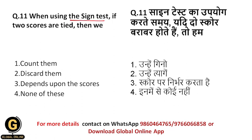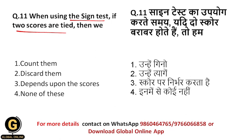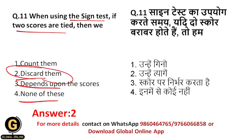Using the sign test, if two scores are tied, then we should count them, discard them, do it depending upon the scores, or none of these? Just as we saw in the Wilcoxon rank sum test question, ties always affect the decision. Therefore, if ties occur in the sign test, we should discard the values — we should discard the scores. The correct answer is 2: discard them.